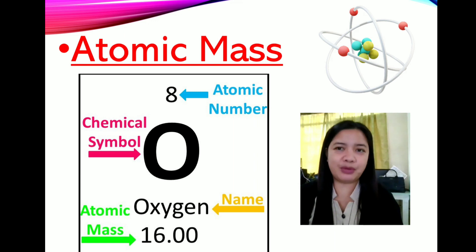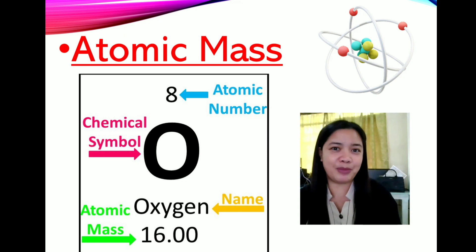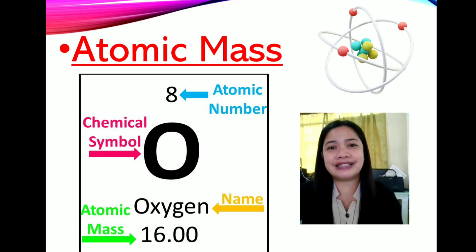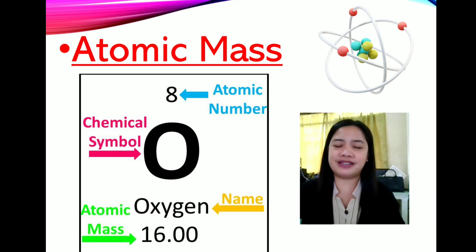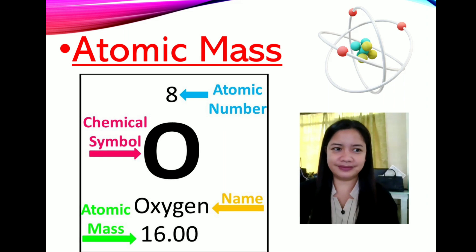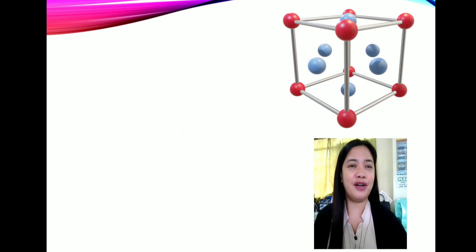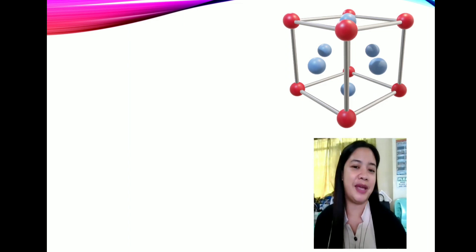Just like this one — the symbol, the name, and the atomic mass. So what is the atomic mass of oxygen? That is 16.00 — that is the atomic mass of oxygen. So now we have identified the definition of atomic mass and an example, which is oxygen.